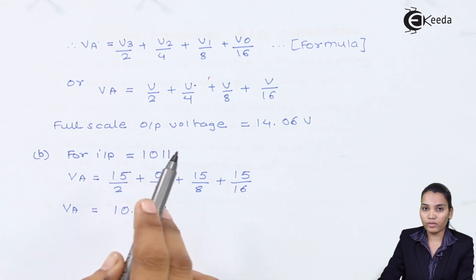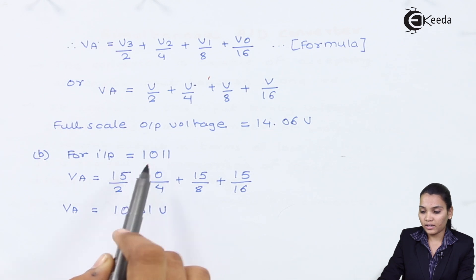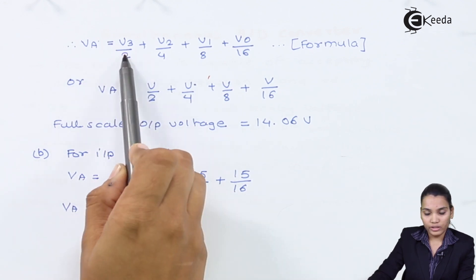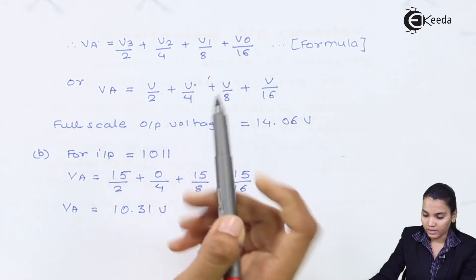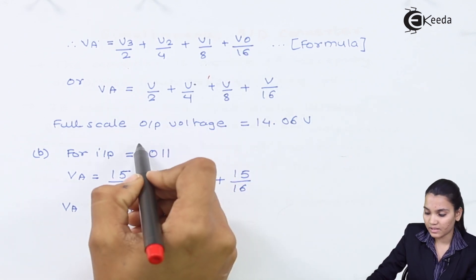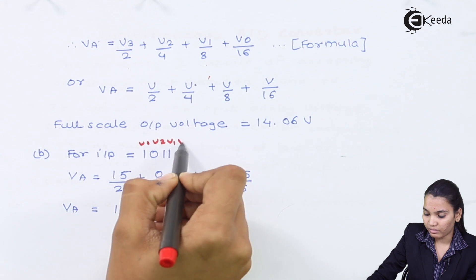Now the second step is we need to find out the analog output voltage when the input is 1011. So we know that VA = V3/2 + V2/4 + V1/8 + V0/16. Now here see, this is V3, V2, V1, and V0.